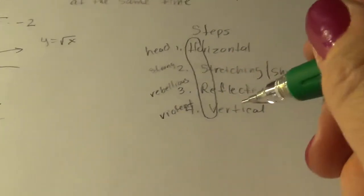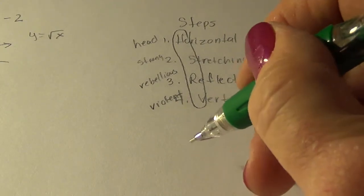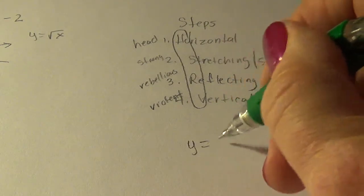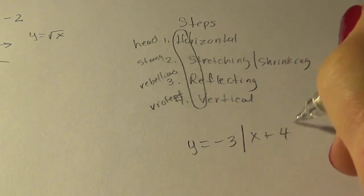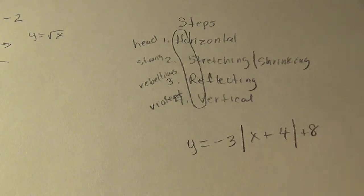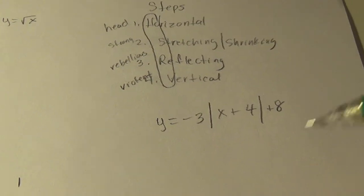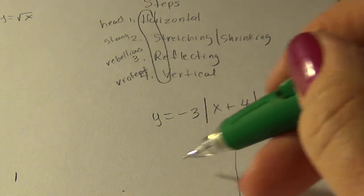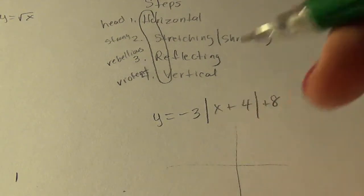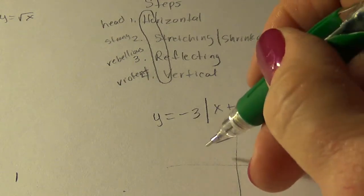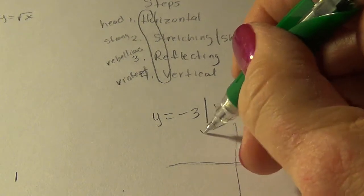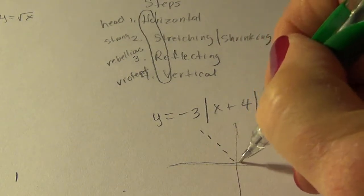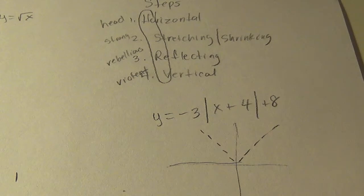All right. Let's do y equals negative three, x plus four, plus eight. All right. So the first thing is figuring out what the parent function is. It's the absolute value function. So dotted in. Absolute value.